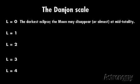French astronomer André-Louis Danjon proposed a zero to five scale to evaluate how dark a lunar eclipse appears. The letter L represents the Danjon number for any eclipse. Danjon assigns zero to the darkest eclipses. During such events, the moon may disappear at mid-totality.